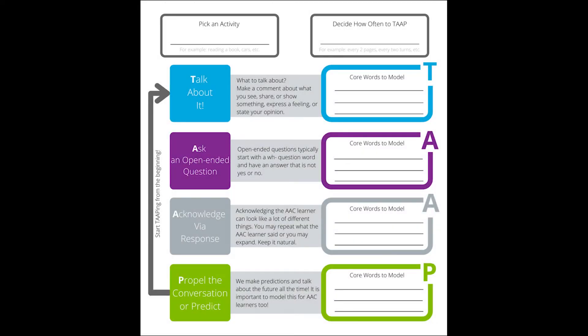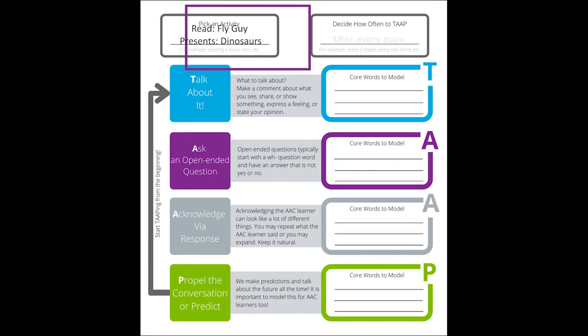The first step to tap your way through is to pick an activity. We've already done that — we're reading the book Fly Guy Presents Dinosaurs. Next, you decide how often you will stop and tap. For this story, we suggest tapping after every page of the book.